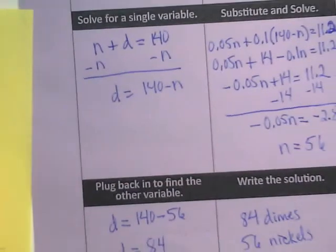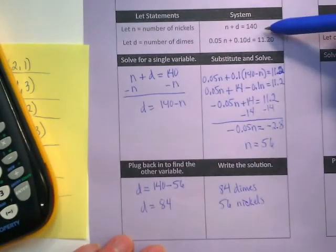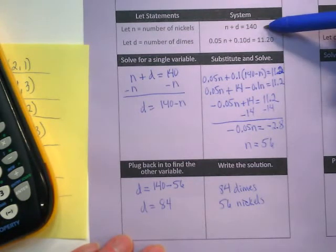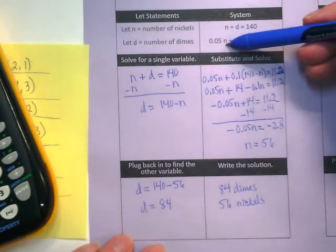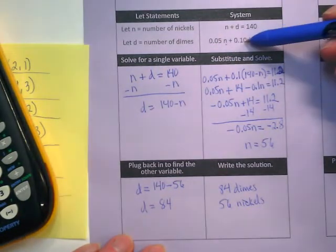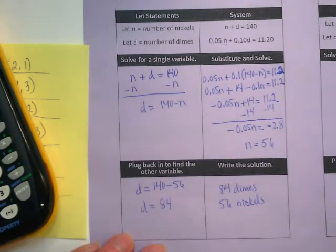How can I check this work? I could go back up to these two equations and plug it in. Is 84 plus 56 equal to 140? Is 56 times 0.05 plus 0.1 times 84 equal to 11.20? That's how you would check.